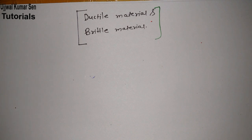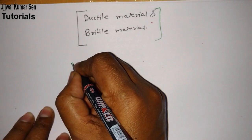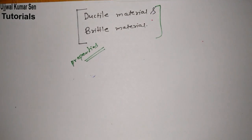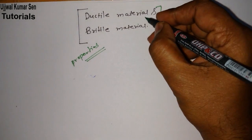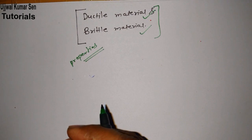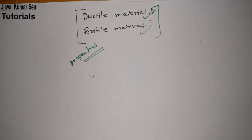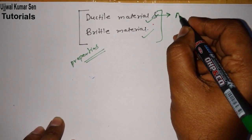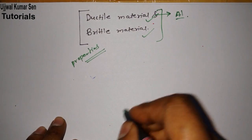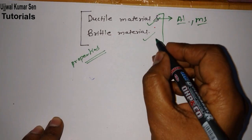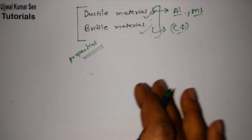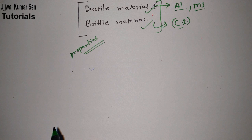If you are talking about ductile material and brittle material, these are basically two properties of material. So there are examples of both brittle and ductile materials. For example, aluminium is a ductile material, mild steel is a ductile material. For brittle material, you can say cast iron is a brittle material.